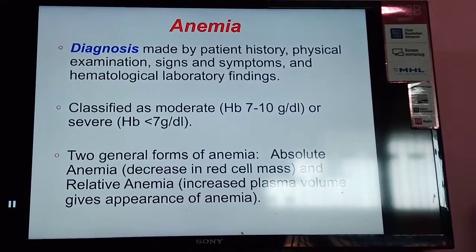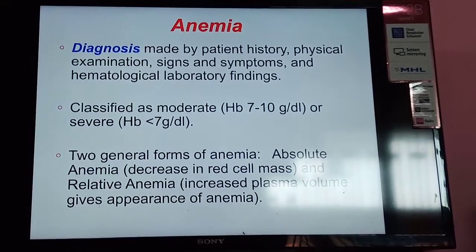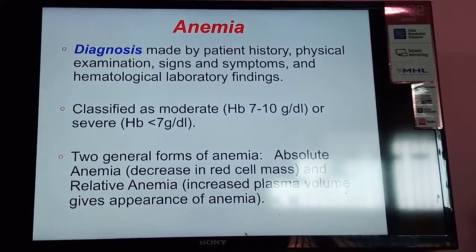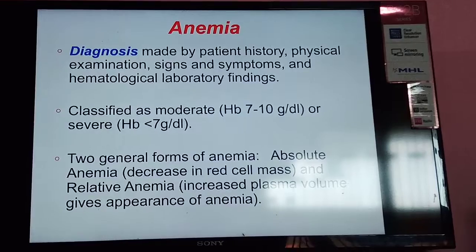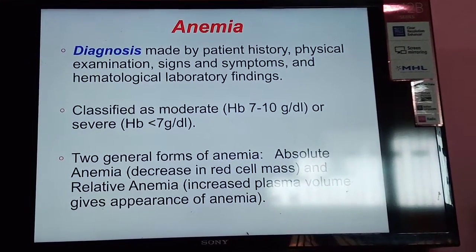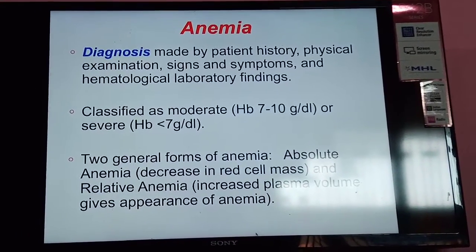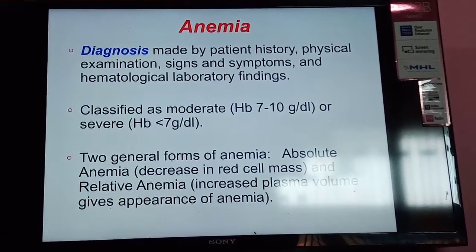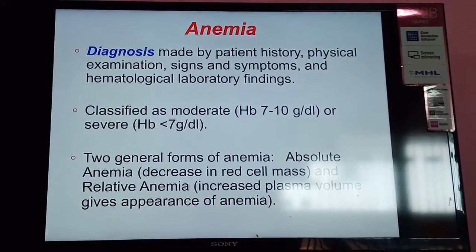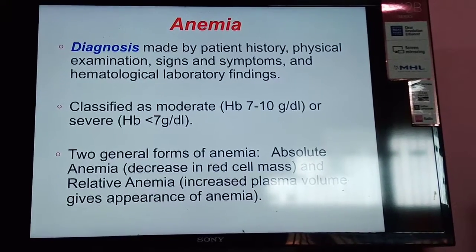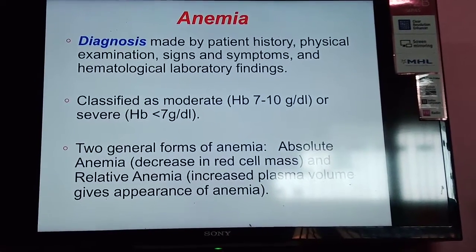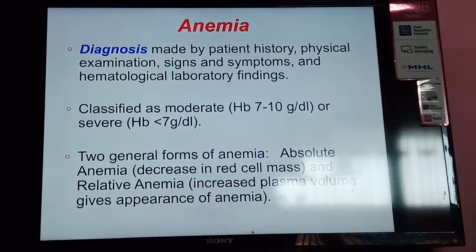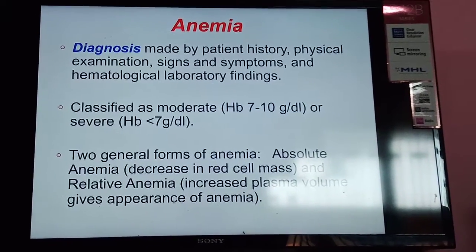Diagnosis of anemia is made by patient history, physical examination, signs and symptoms, and hematological laboratory findings. Anemia may be classified as mild, moderate, and severe. In severe form, hemoglobin is below 7 g/dL; in moderate form, 7–10 g/dL; in mild form, 10–11 g/dL. There are two general forms: absolute anemia, with decreased red cell mass, and relative anemia, with increased plasma volume giving the appearance of anemia.